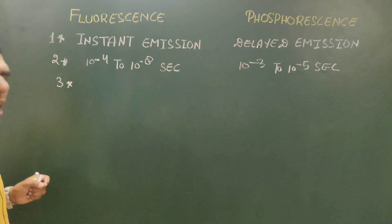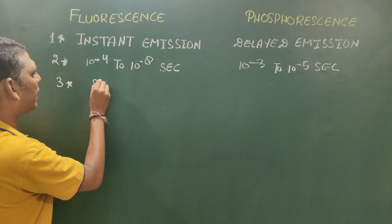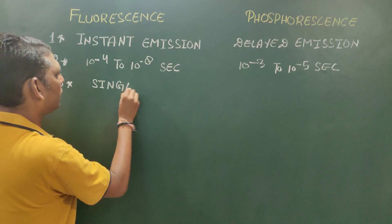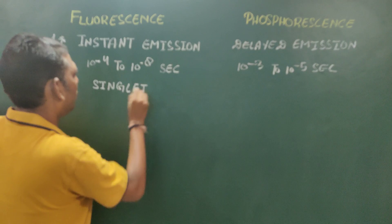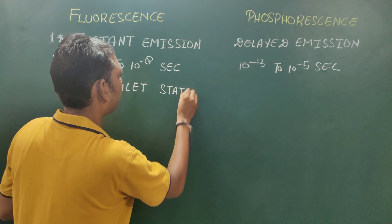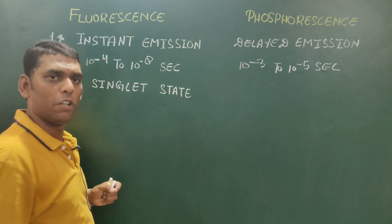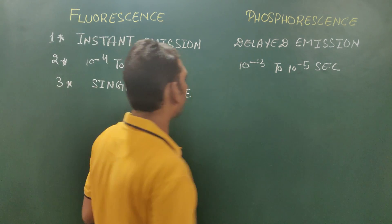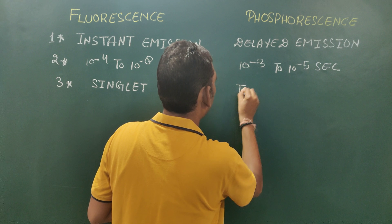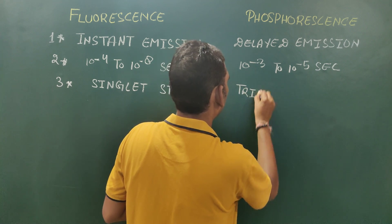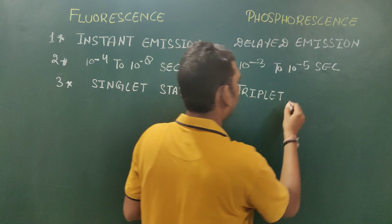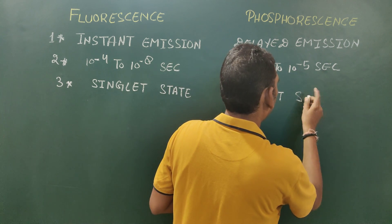The third difference: fluorescence occurs in those molecules in which electrons are present in the singlet state, whereas phosphorescence occurs in those molecules in which electrons are present in the triplet state.